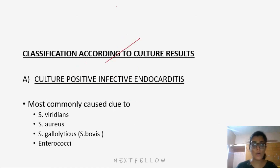Classification according to culture results: culture-positive infective endocarditis is most commonly caused by Streptococcus viridans, Staphylococcus aureus, Streptococcus gallolyticus, and Enterococcus.